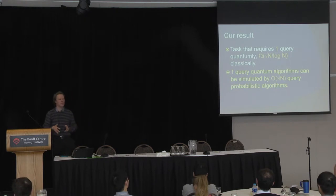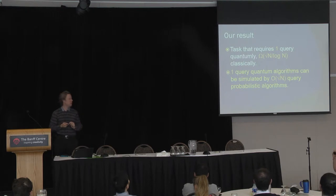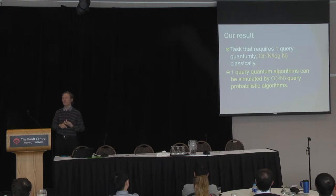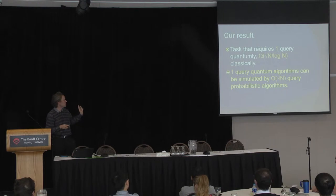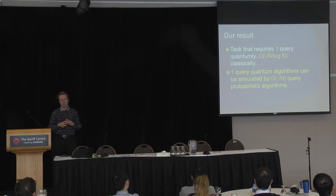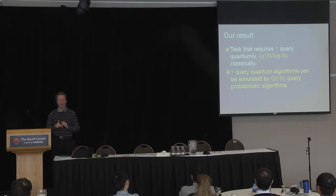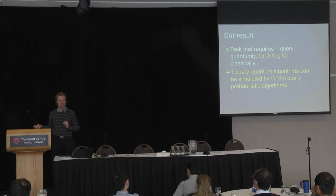We show that there is an even bigger gap. There is a computational problem which we can do with one query quantumly and square root of n over log n queries classically. Second, we show this is almost optimal: any quantum algorithm that makes just one query can be simulated with order square root of n queries probabilistically. So it's optimal up to this log n factor, which is probably an artifact of our proof not being quite optimal.